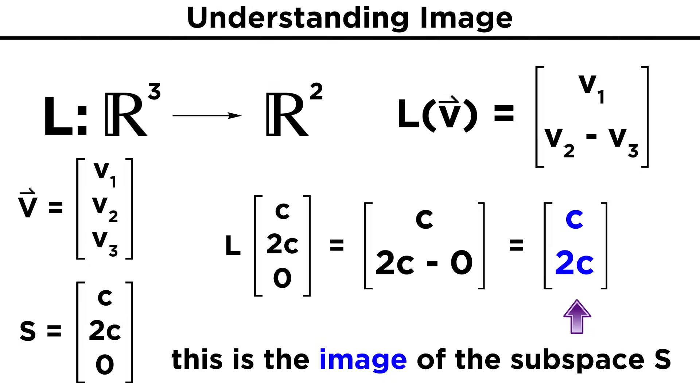The image of our subspace is the set of vectors of length two, where the second element is twice the first.